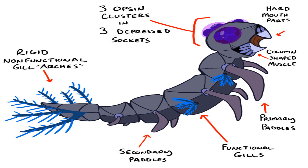Its eyes consist of three collections of opsin clusters in slight depressions in the skull. The organism secretes a mucus that protects the eyes from acidity and salinity changes in the ocean. Its paddles have been reduced to primary and secondary pairs in the 2-3 and 4-5 tagmata. Functional gills have conglomerated in four pockets on the second and third tagma. The organism hunts by gently swimming over the substrate and using its non-functional and rigid gill arches on its last tagma to feel for prey. It can quickly whip around if prey is found, using its mouthparts to seize its meal. The eyes are angled upward to detect predators, and thus this animal cannot see below its body.